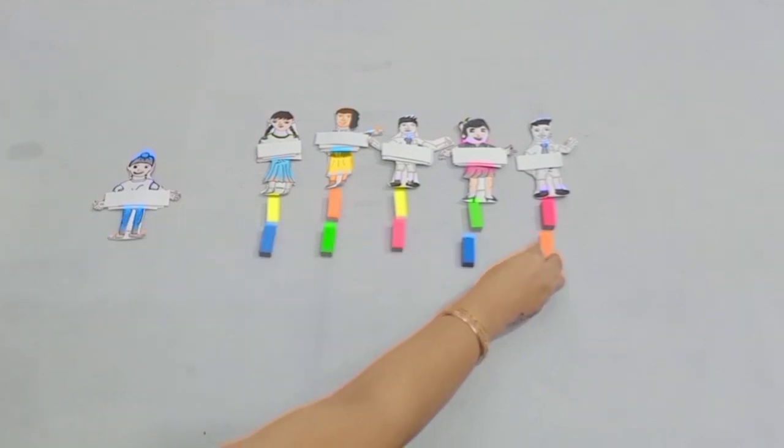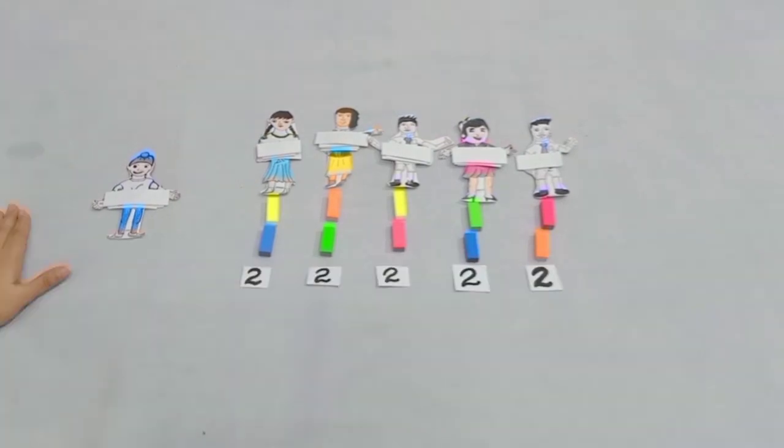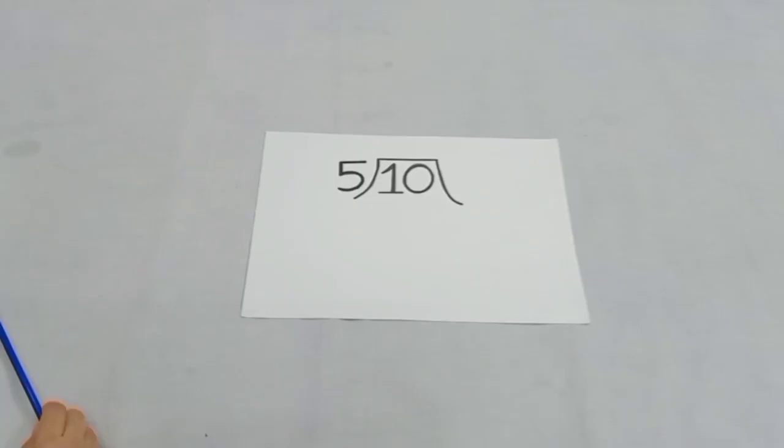And no means zero. So dear students, it shows he has divided erasers equally among his five friends, and each friend got two erasers.